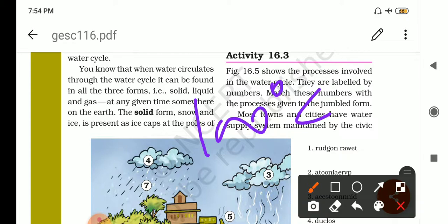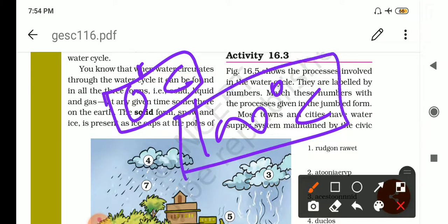Then zero degree centigrade is the freezing point of water and hundred degree centigrade is the boiling point of water.